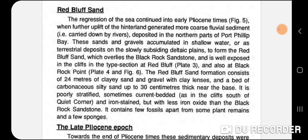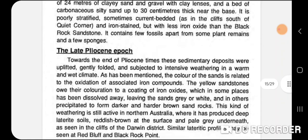On the north part of the faults we have uplift, and in the deltaic plain there is subsidence — it's actually going down. That's one of the major reasons Port Phillip is the way it is — it's subsided a bit. The Black Rock Sand formation consists of 24 meters of clay, sand and gravels with clay lenses and carbonaceous silty sand about 30 centimeters thick near the base. When you get to the silty sand, that's described as the base of the formation, cutting it off from the Black Rock.